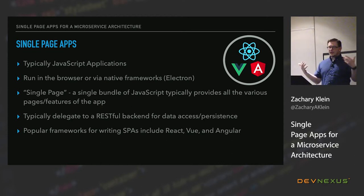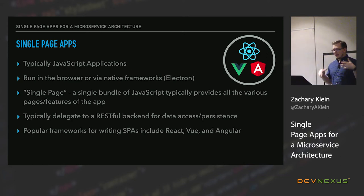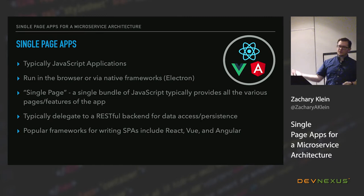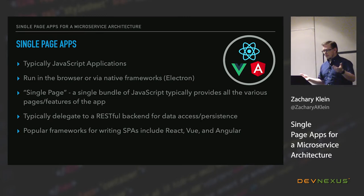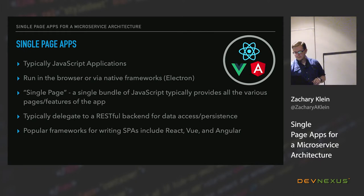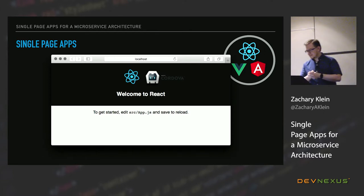Typically these single page applications run in your browser, or they can run natively through some framework like Electron. By single page, it's a single bundle of JavaScript — a single view that can dynamically update and interacts with usually some sort of a REST API or back end. The more popular frameworks include React, Vue.js, Angular, and you can see a simple React app created with the CLI.